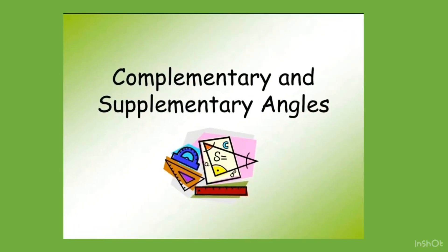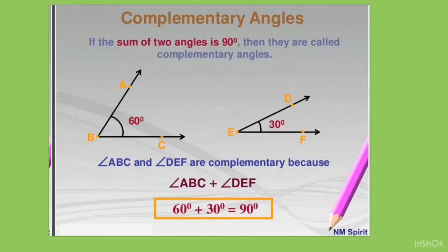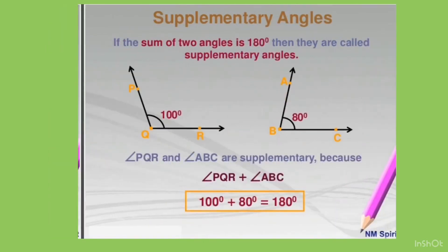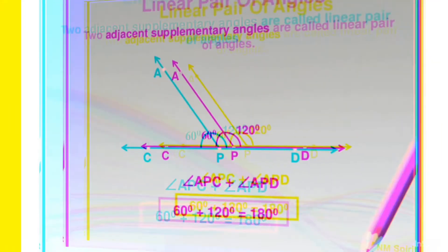Next is complementary and supplementary angles. If the sum of two angles is 90 degrees, then they are called complementary angles. On the other hand, if the sum of two angles is 180 degrees, then they are known as supplementary angles.